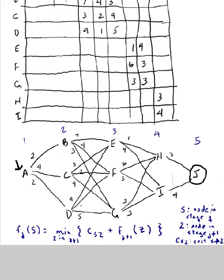And the way I'm doing that is by finding the minimum cost to go to each of the nodes in the subsequent stage, and then adding the already computed optimal cost to go from that node in the subsequent stage to the destination, which is what that is.